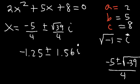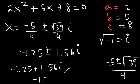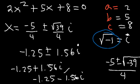So there are two answers. The first is negative 1.25 plus 1.56i, and the second is negative 1.25 minus 1.56i. We have imaginary solutions because inside the square root we have a negative number. Thus we have two imaginary solutions. Now you understand how the discriminant is related to the quadratic formula and how to determine the number and type of solutions.